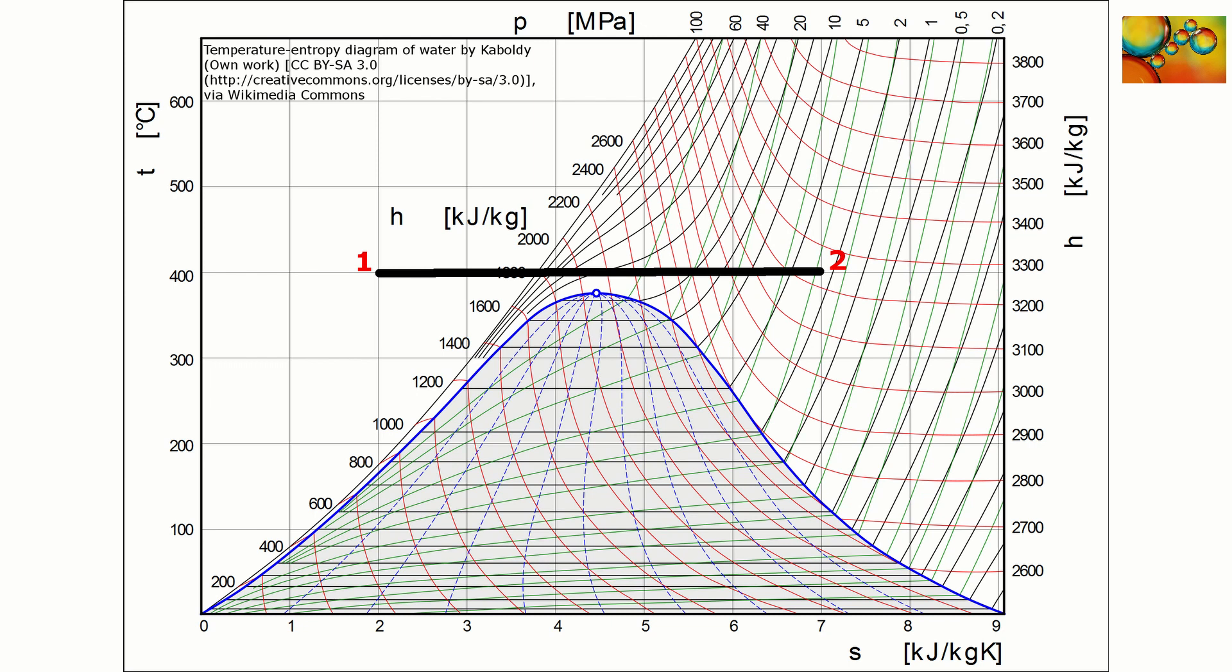An isothermal process is represented by a horizontal line. For example, a process that starts in state 1 and proceeds horizontally to state 2 happens at the constant temperature of 400 degrees Celsius.